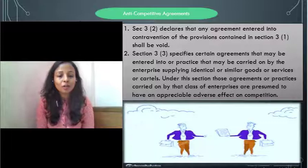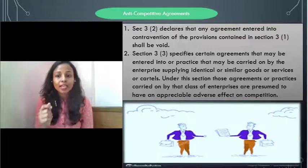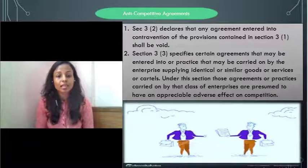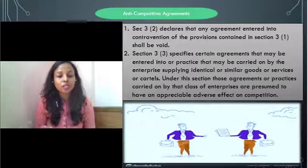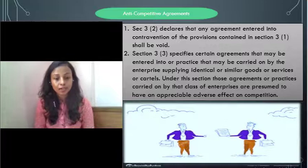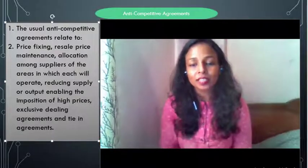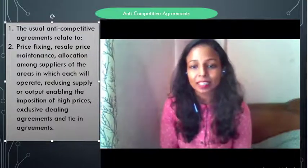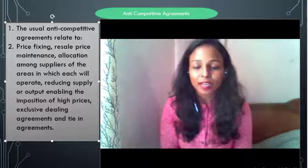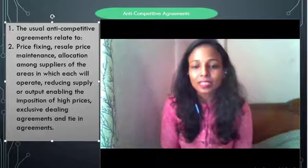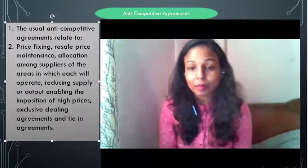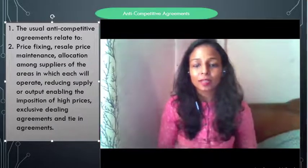Section 3(3) talks specifically about horizontal agreements — agreements entered into or practiced by similar or identical enterprises. For example, if all cement companies come together, make an agreement, fix prices, and fix supplies, that becomes a horizontal agreement. Such agreements among identical enterprises for supply, manufacturing, production of goods, or services are per se void. Anti-competitive agreements typically include price fixing, resale price maintenance, allocation among suppliers, and reducing supply — all aimed at cutting down competition in the market.